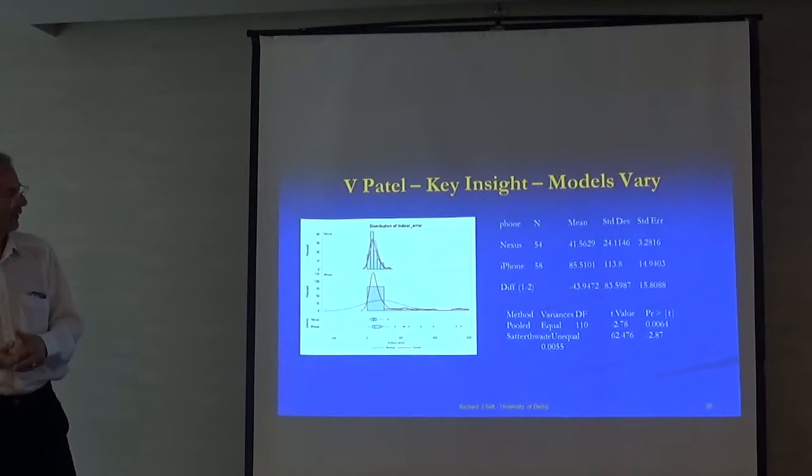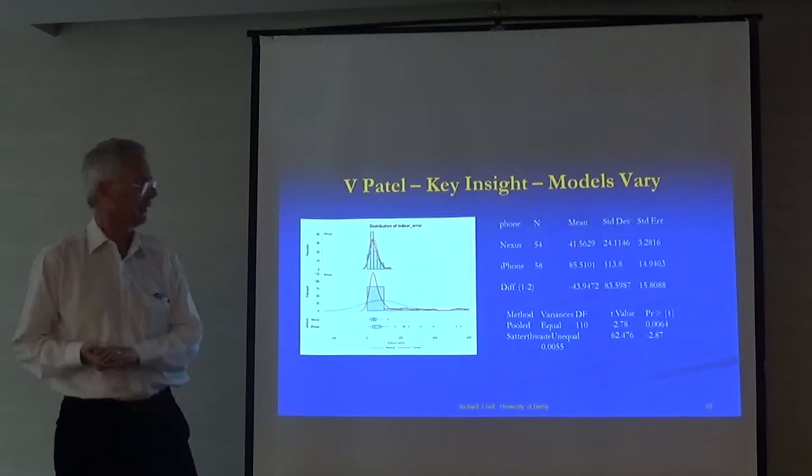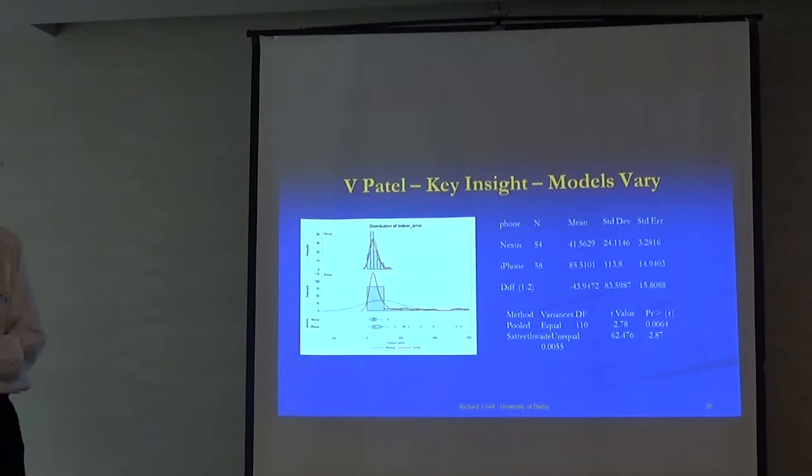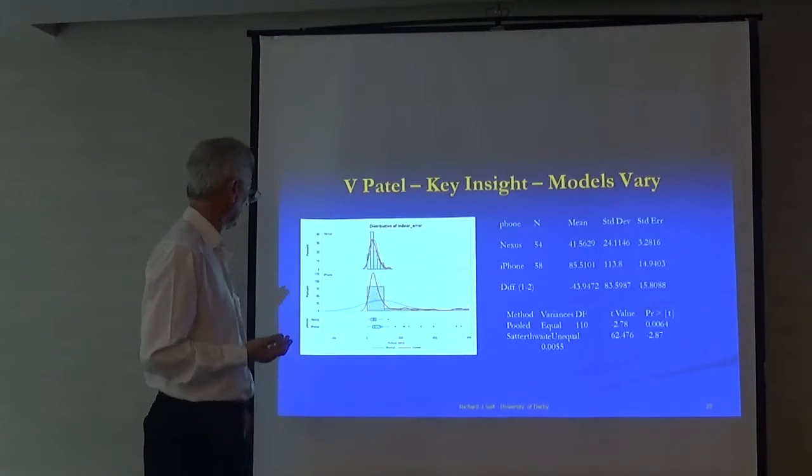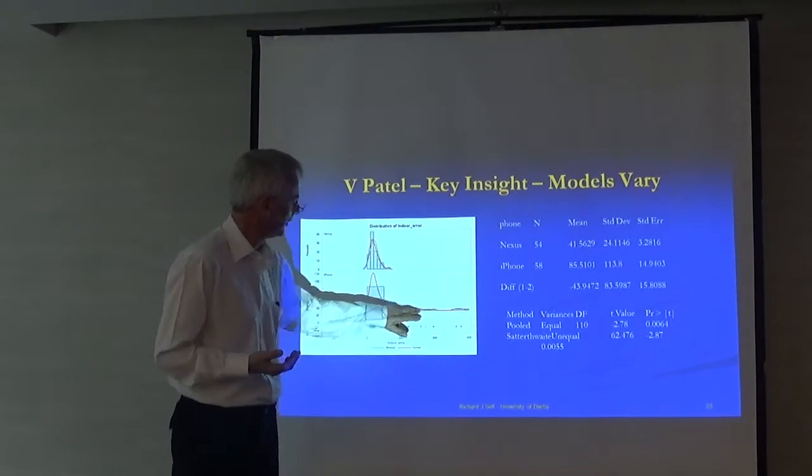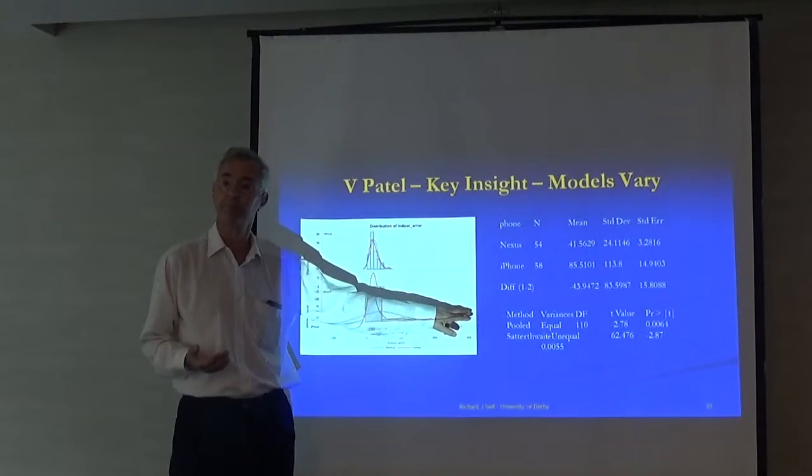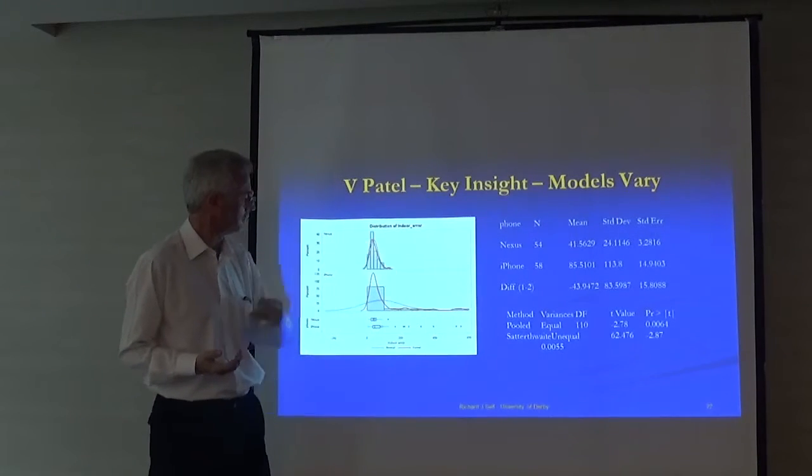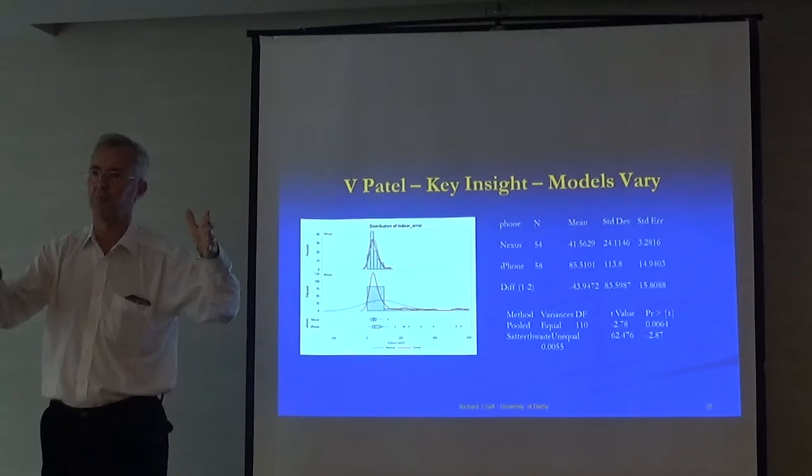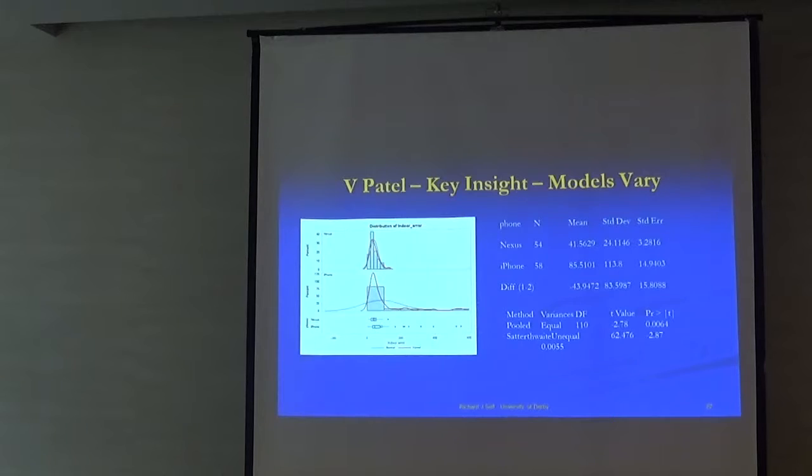Vishal Patel actually happened to have two cameras. Didn't do too many photos but it still shows very different ways of working. The iPhone has a long tail out to the 600 meter error. The Nexus phone, much much more compressed, much less error. So the insight here is that different makes of phone have different levels of accuracy.